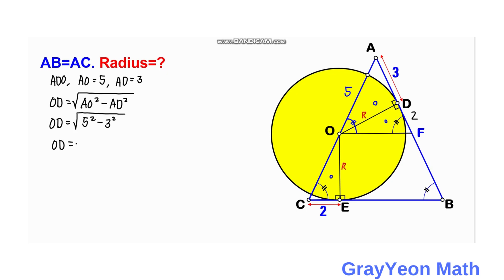OD equals the square root of 25 minus 9, so OD equals the square root of 16. Therefore, OD equals 4 units, and this OD equals r equals 4 units. That is our answer.